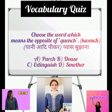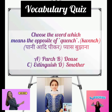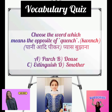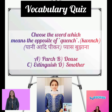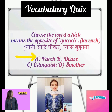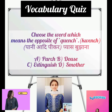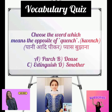Choose the word which means the opposite of quench. Quench means paani, juice bagarra pekar, pias bujana. Options are parch, douse, extinguish, or smother. Parch means sukhna, murjha jana. So parch is the opposite of quench. Extinguish means aag bujana, and smother means naak ya muh cover karke kisi ko maarna.